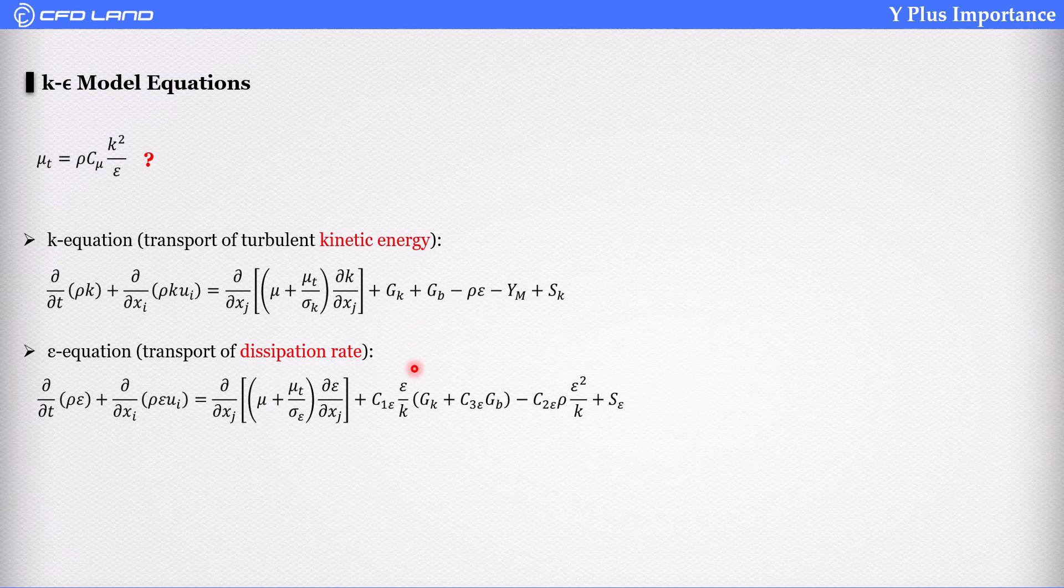In both equations, there are terms of source and sinks. They could be due to the production of mean velocity shear, production due to buoyancy, or user-defined sources. In k-equation, there is a negative term that is dissipation. In epsilon equation, there are model constants that their values are as presented.